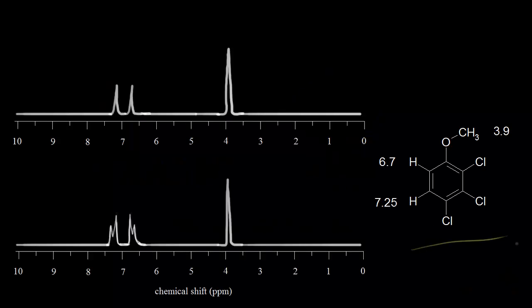If we look at this molecule, we would expect three signals on an NMR spectrum. This proton has a chemical shift of 7.25 parts per million. This proton is in a slightly different environment, and so we get a slightly different chemical shift at 6.7. These three protons are equivalent, and therefore they give us one signal at a chemical shift of 3.9 parts per million.